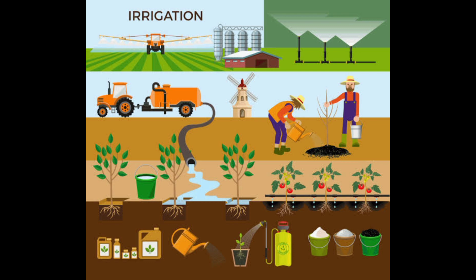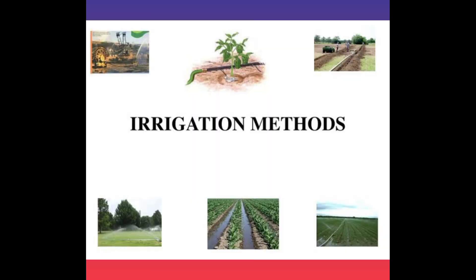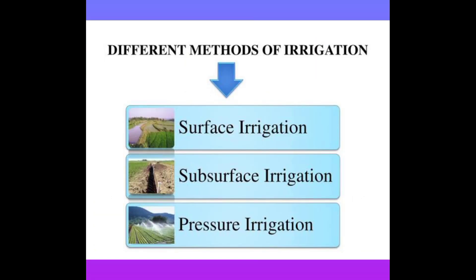There are many methods of irrigation. So as we have discussed irrigation, we are going to discuss about its methods. So basically there are three types of irrigation: surface irrigation, subsurface irrigation, and pressure irrigation.